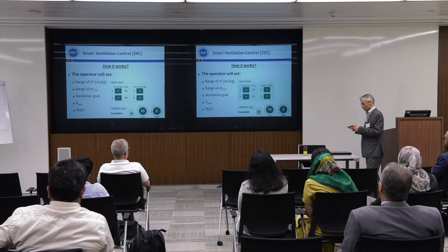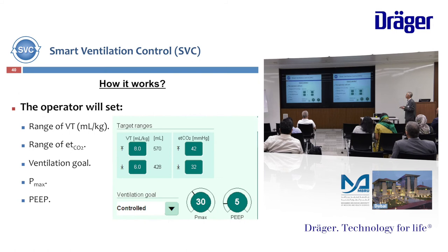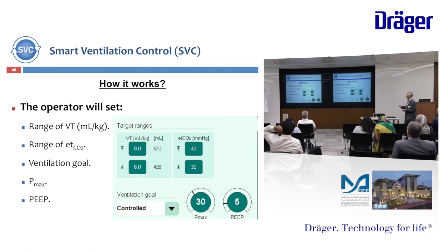Smart ventilation control is a system designed to deliver knowledge-based strategic closed control loop automation of minute ventilation. Knowledge-based means the stored algorithms are based on data extracted from experts — from all of you — and behavior in specific situations. Smart ventilation control operates as pressure controlled or pressure support mode. How it works: the operator sets a range of tidal volume, which can be by default from 6 to 8 or from 4 to 9 mL/kg. The operator also sets a range of end-tidal CO2, which can be modified. The default depends on your target of ventilation.